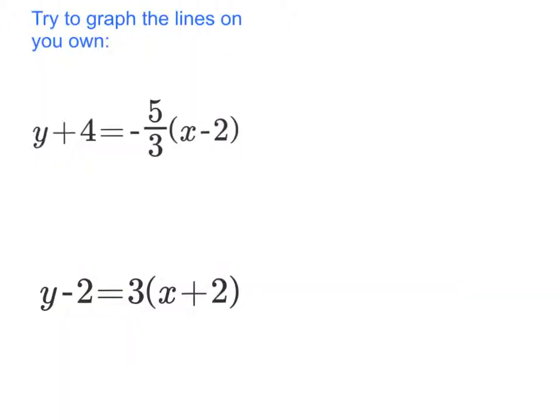You see here two example problems that I want you to try on your own. I want you to graph these two problems in point-slope form. I know we haven't done that yet, but use what you know about the form to graph the problem. First, identify the slope. Then identify the ordered pair. With those two things, you should be able to graph it. Good luck.